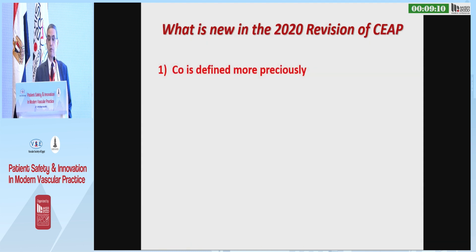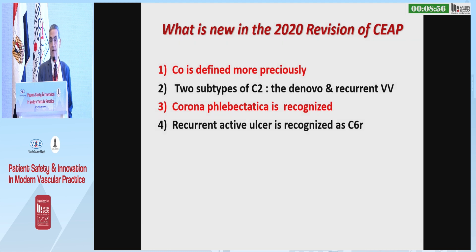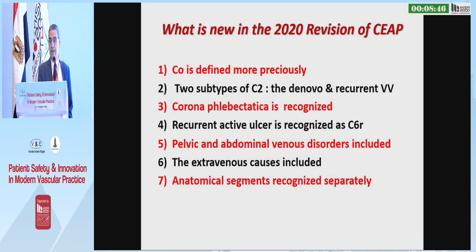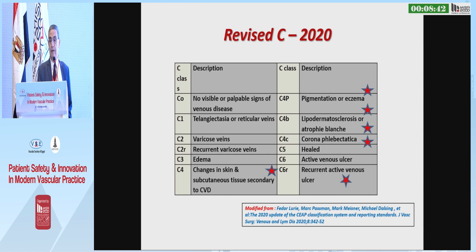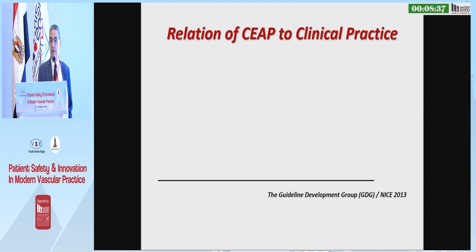What is new in the 2020 revision? C0 is defined more precisely. Two subtypes of C2 — the primary and the recurrent varicose vein — are added. The corona phlebectatica is recognized. Recurrent active ulcer, C6R, is added. Pelvic and abdominal venous disorder is included. Extravenous causes are included. The anatomical segment is recognized separately.